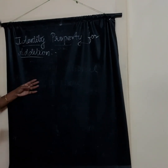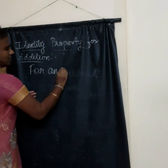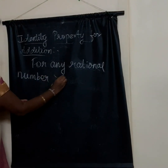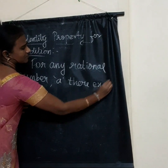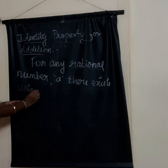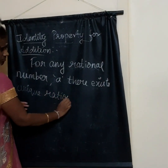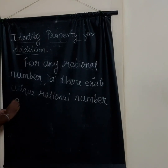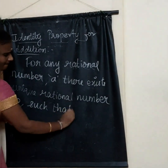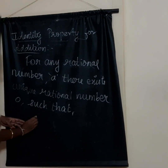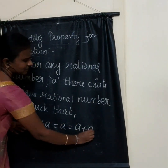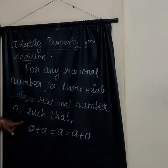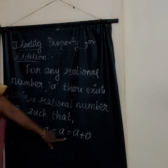Identity property for addition: For any rational number A, there exists a unique rational number 0 such that 0 plus A is equal to A plus 0.